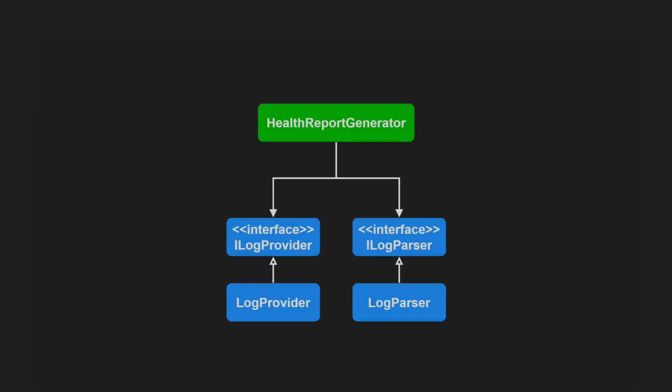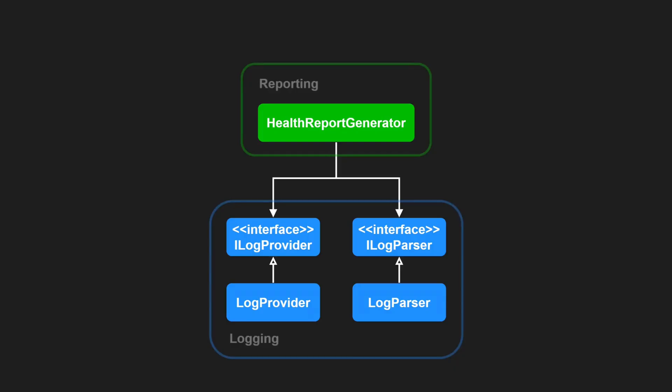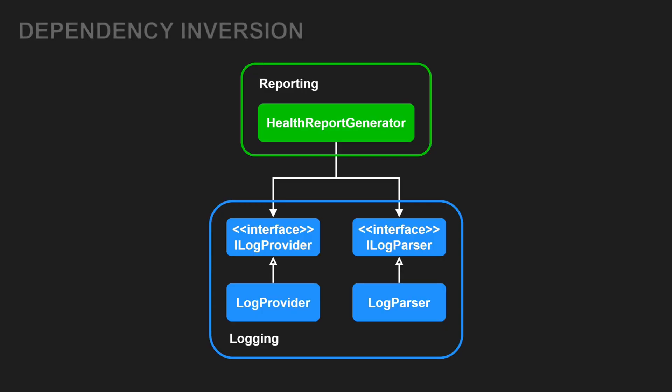So far, so good. But if we zoom out a bit, we can see that even though our classes are less tightly coupled, the generic reporting module still directly depends on the specific logging module and therefore can't be reused in another context without it. To fix that, we apply dependency inversion.